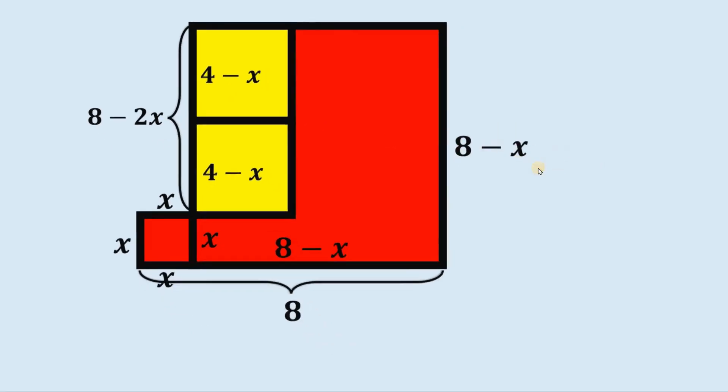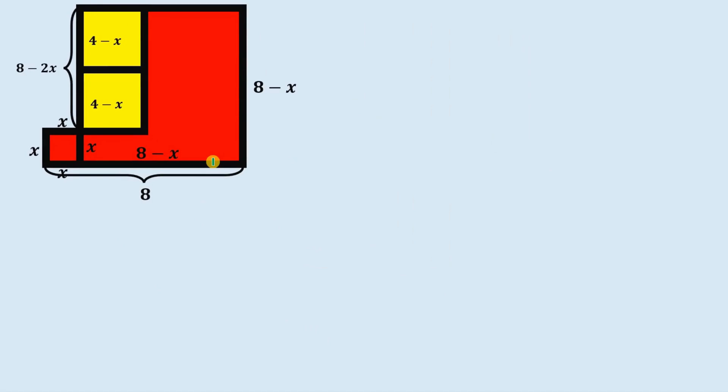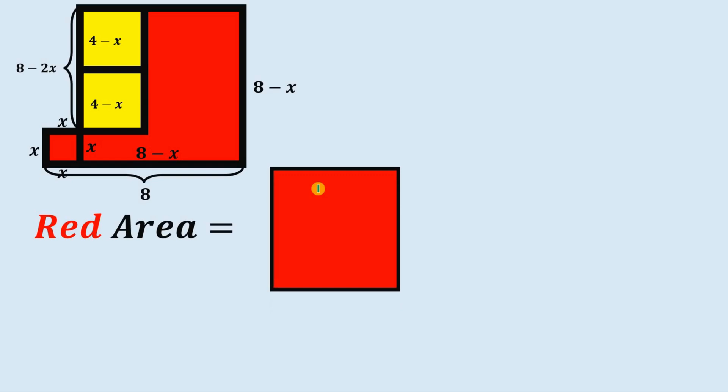Now to find the area of the red shaded region, what we're going to do is to get the area of the big red square, then add the area of this small red square and subtract the area of these two congruent yellow squares.